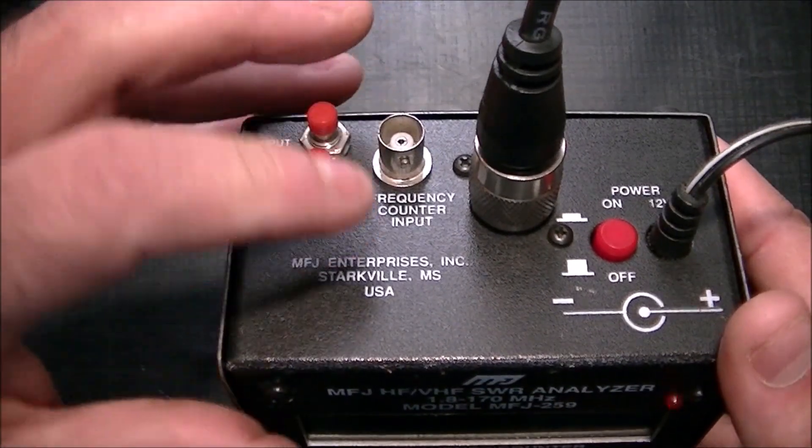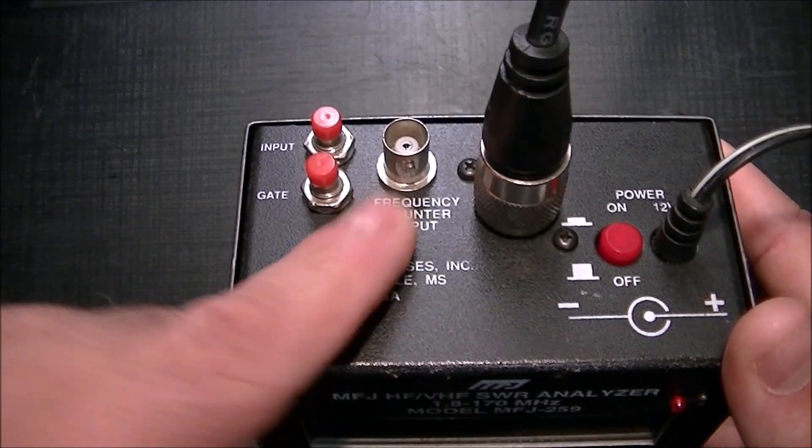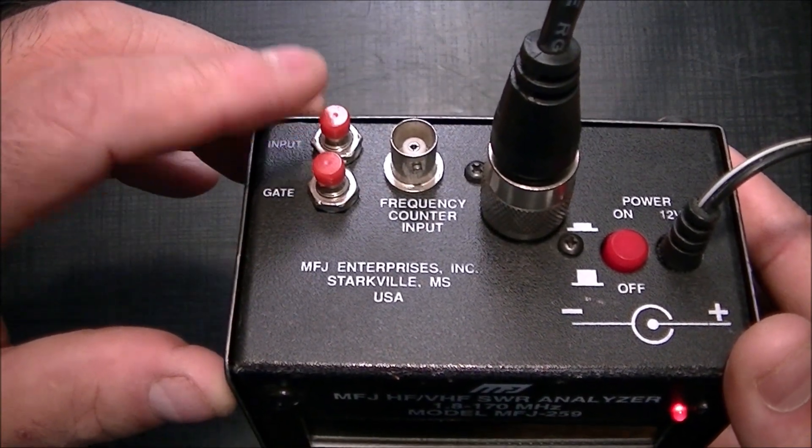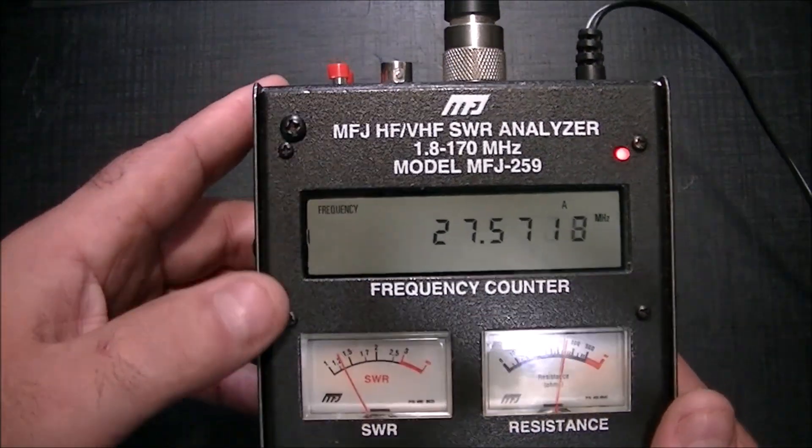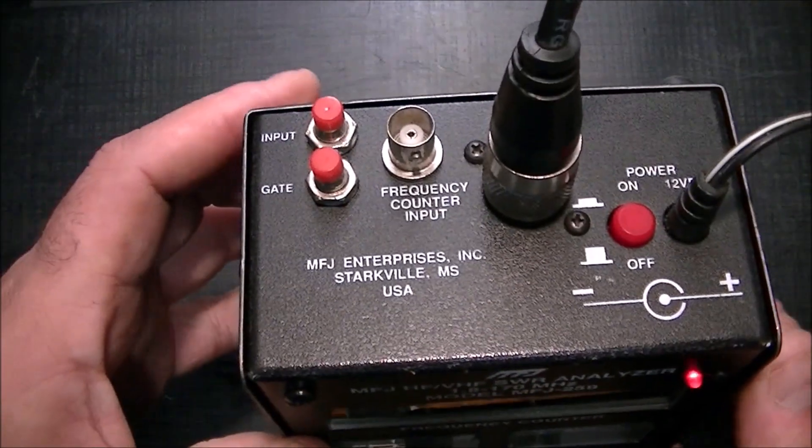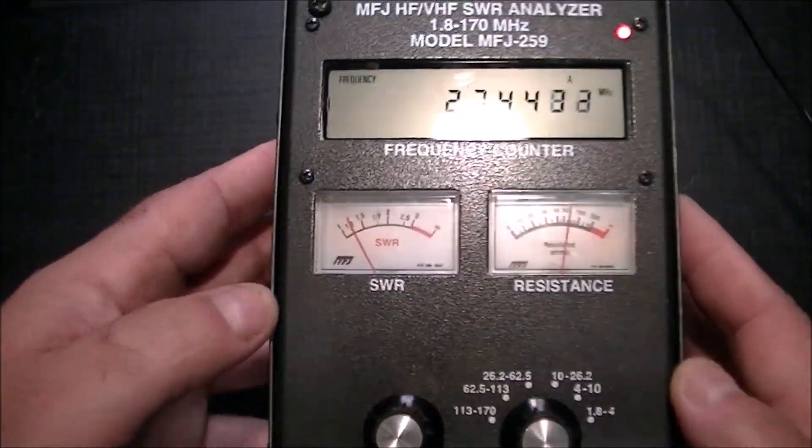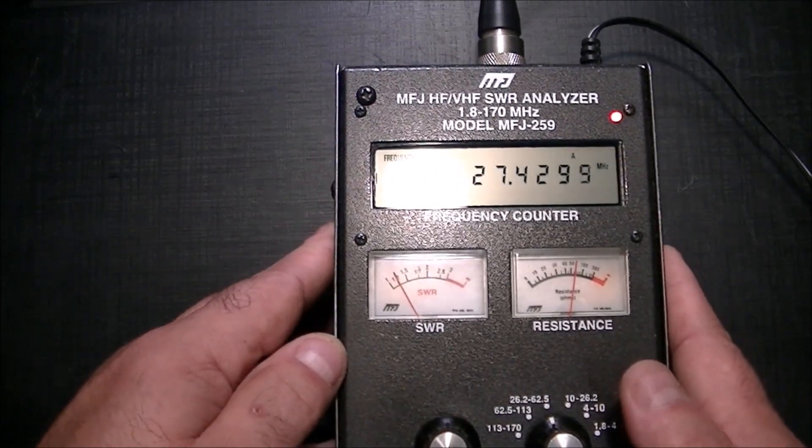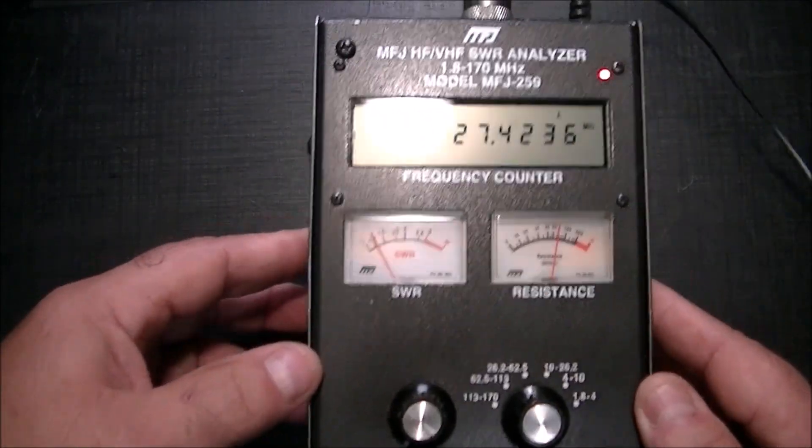You can also use the frequency counter with the frequency counter input. This is your input and your gate. You can set the different settings for your gate for your frequency. This is where your antenna attaches, power supply, and that's pretty much it.